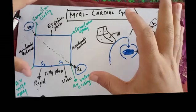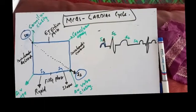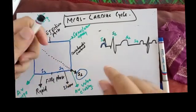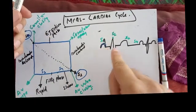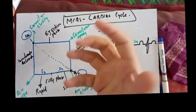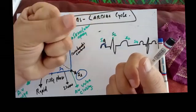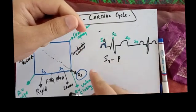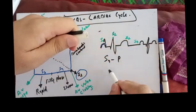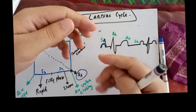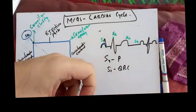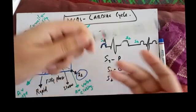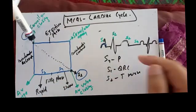Now correlating with the ECG: S4 is produced during which wave — P, QRS, T, or ST segment? S4 is due to atrial contraction, and atrial contraction occurs during the P wave. So S4 is produced during the P wave. S1 is due to closure of the mitral and tricuspid valves, occurring during ventricular depolarization — that is the QRS complex.